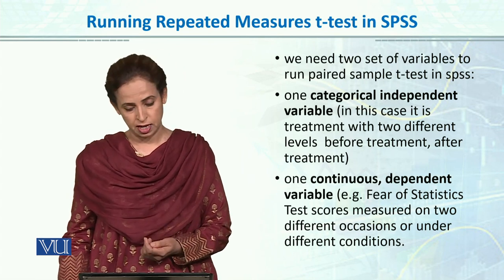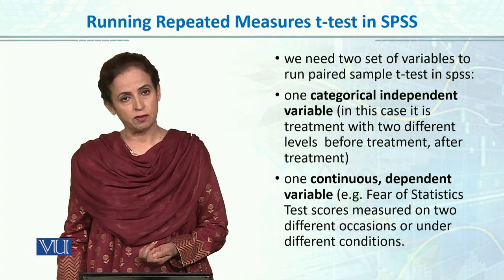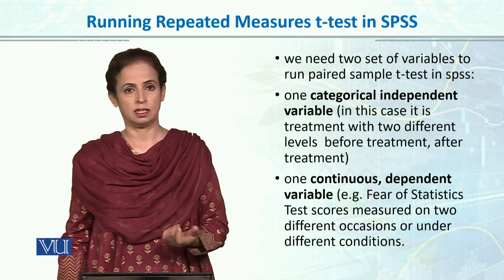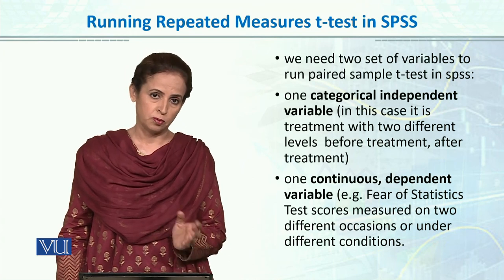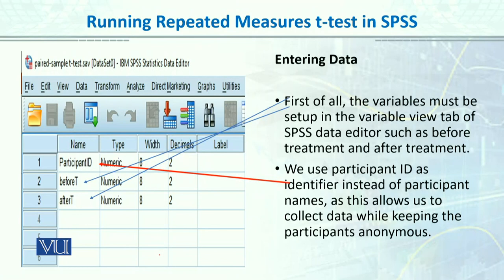We have time one and time two testing. We have one continuous dependent variable. The first column is participant ID, the second column is before treatment, and the third column is after treatment. So now we have two different columns: before treatment and after treatment.